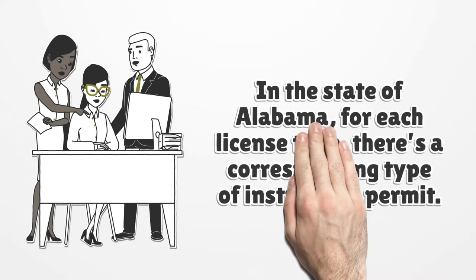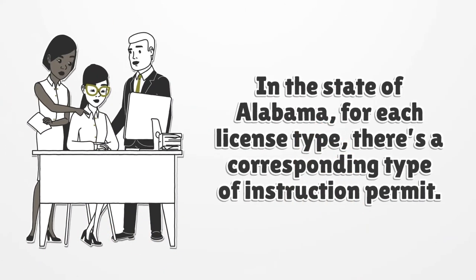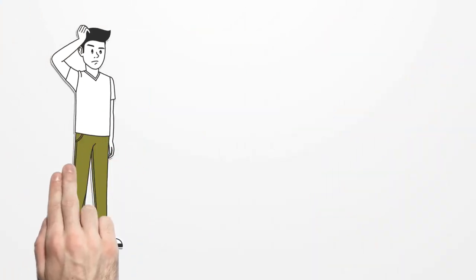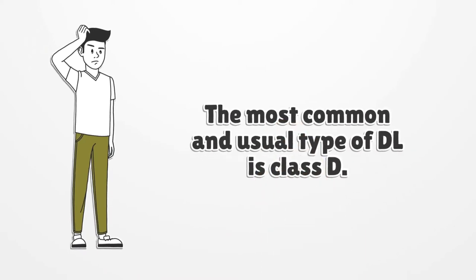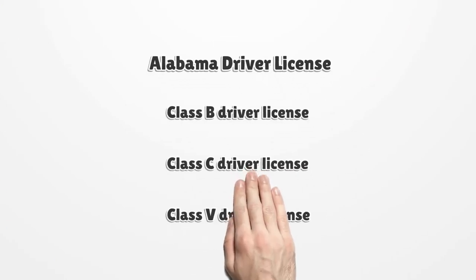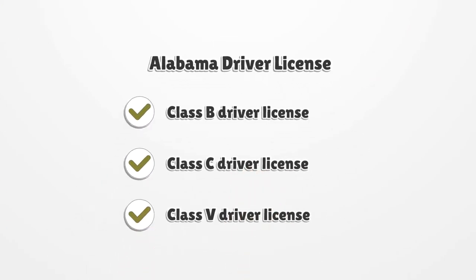In the state of Alabama, for each license type, there is a corresponding type of instruction permit. The most common and usual type of DL is class D. The available license classes are: class D, class A, class B, class C, and class M driver licenses.